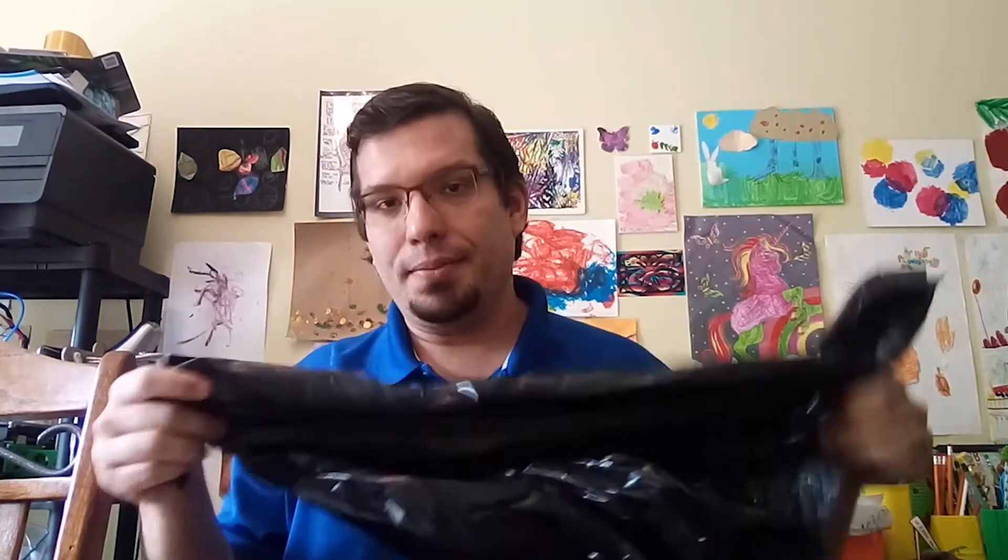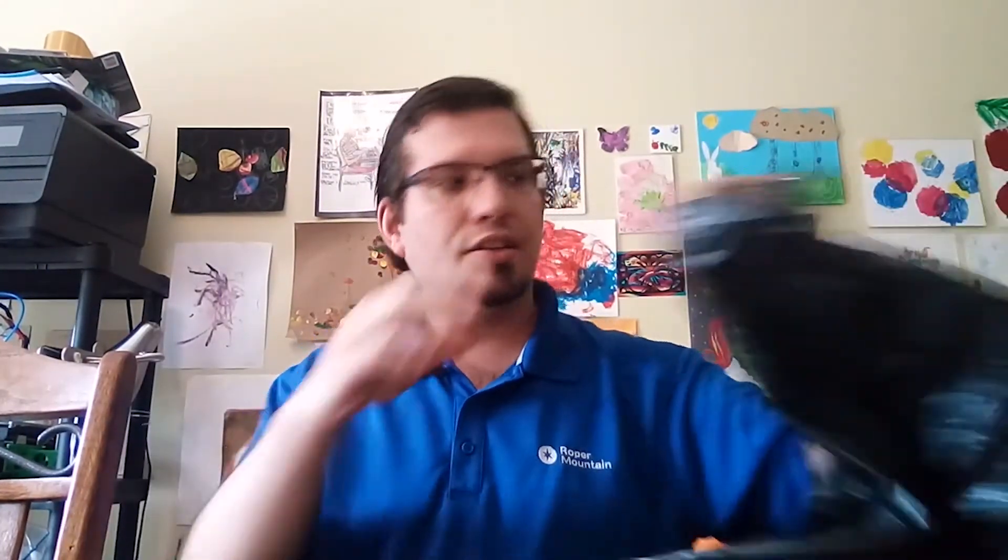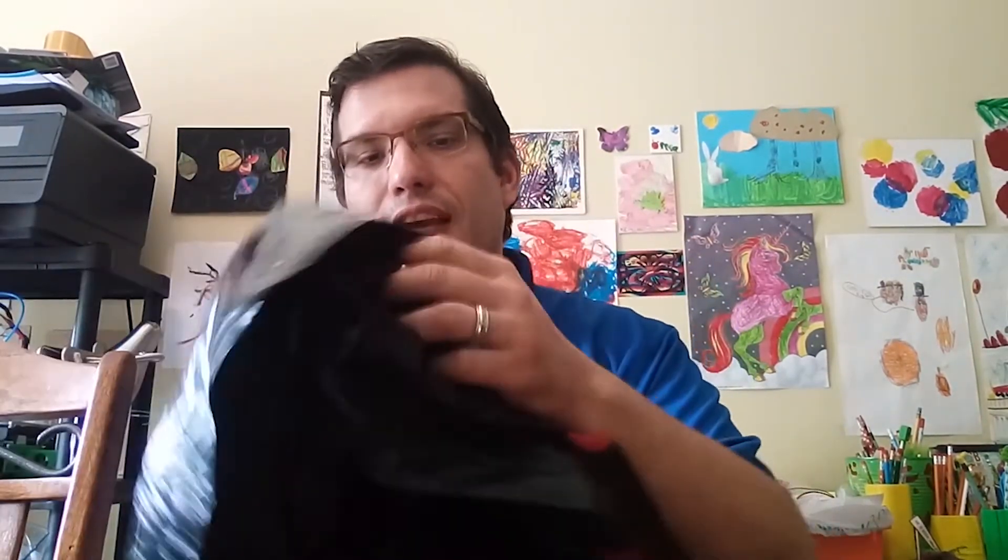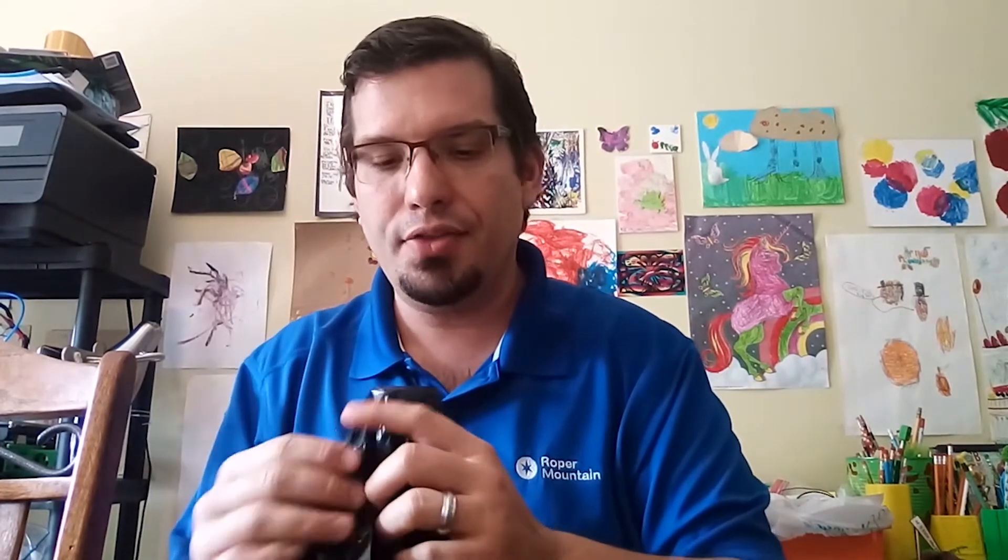So if you take a black trash bag, so a dark colored trash bag, and you open it up. You just want to have one layer of the trash bag over the remote. And then what I want you to do is, you aim it at your TV and see if it will turn it on.